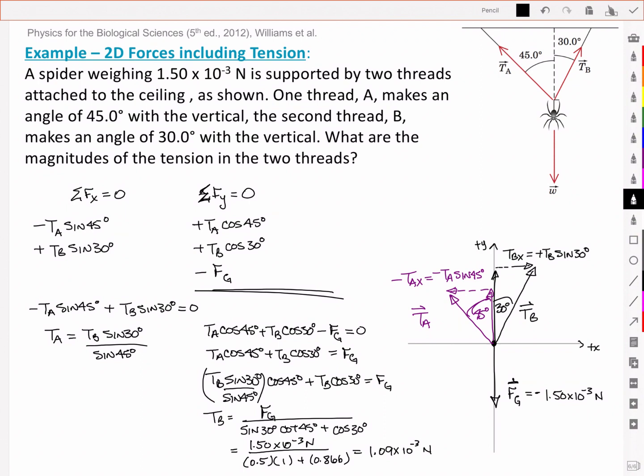Now noting that I've worked with the magnitude here, this is Tb so it's the magnitude of the vector. And likewise I can go back, now I'm going to substitute in, and I'm going to get 7.77 times 10 to the negative 4 newtons. So it asks for what are the magnitudes of the tension in the two threads, and those are my magnitudes.